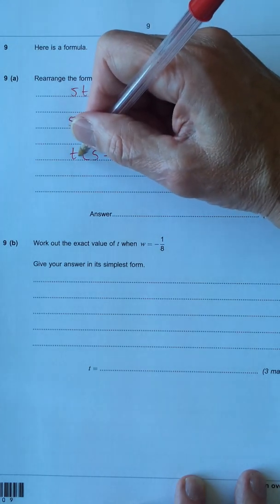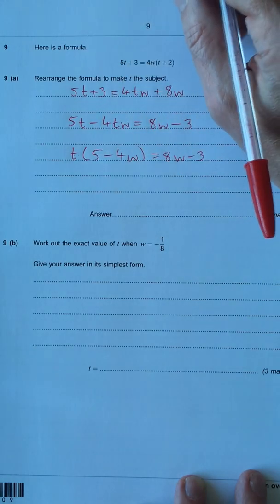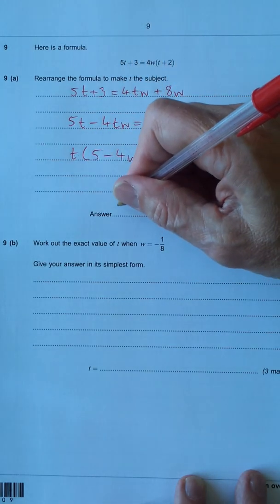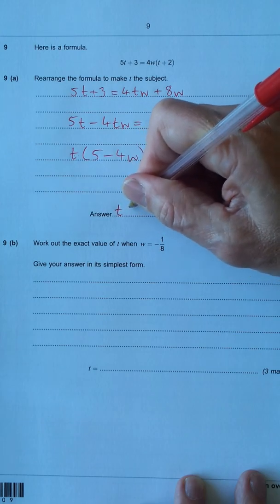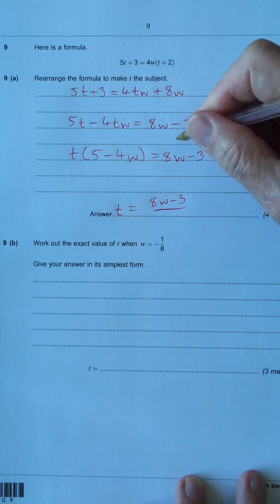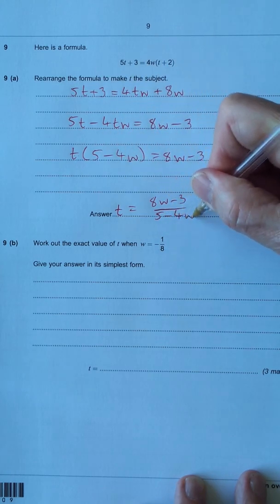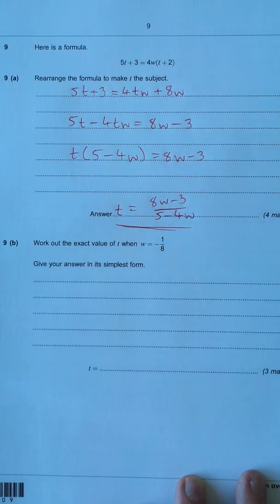Now we have t times something, so the opposite or inverse of times is divide. So you get t equals 8w minus 3 over or divided by 5 minus 4w. That's our part done.